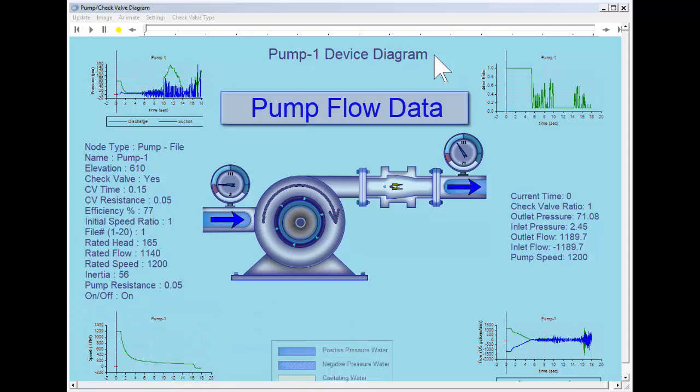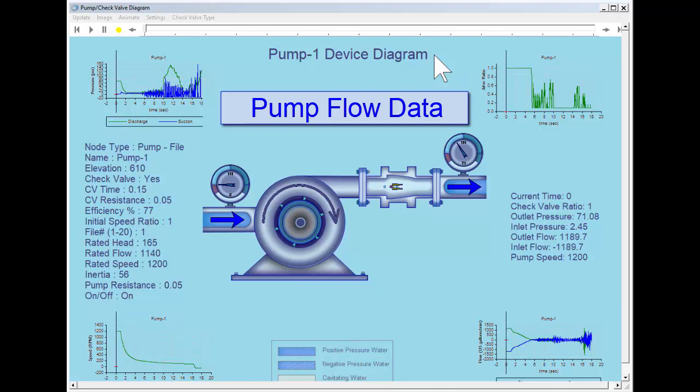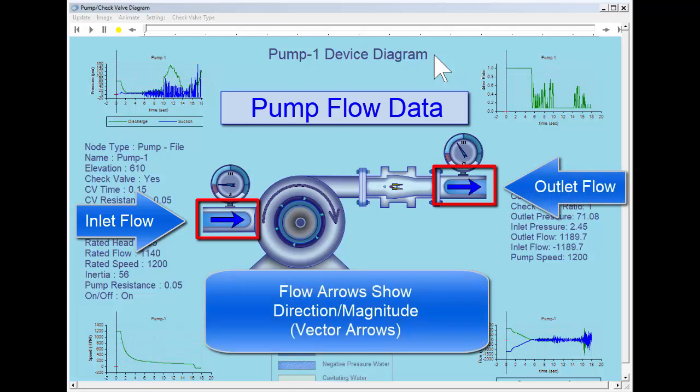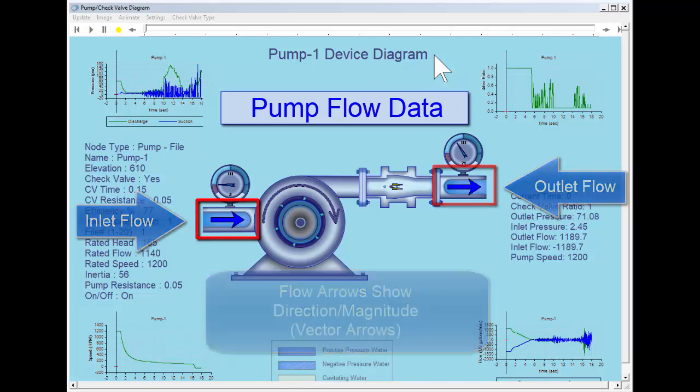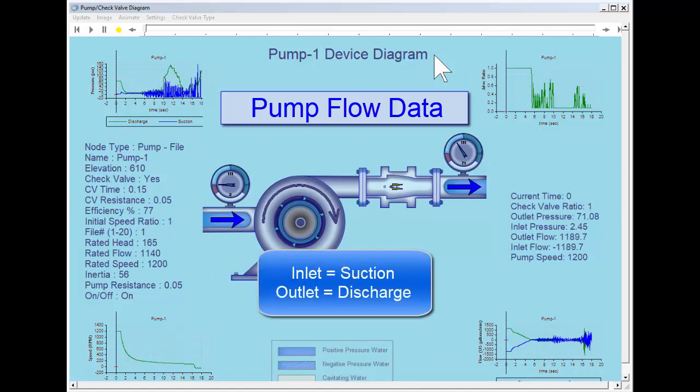Pump flow data is shown in the graph and with vector arrows for both the inlet and outlet flow. The terms inlet and outlet are used synonymously with suction and discharge.